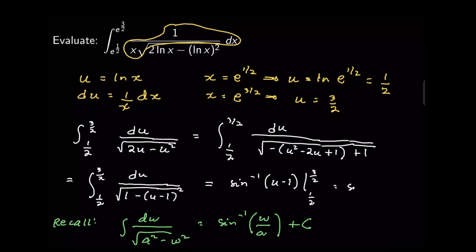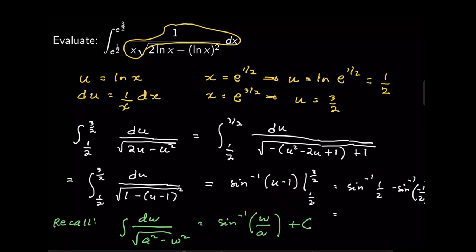Evaluating: arcsin of (3/2 minus 1) minus arcsin of (1/2 minus 1) equals arcsin(1/2) minus arcsin(negative 1/2). The angle whose sine is 1/2 is pi over 6, and arcsin of negative 1/2 is negative pi over 6. Therefore the final answer is pi over 6 minus (negative pi over 6), which equals pi over 3.